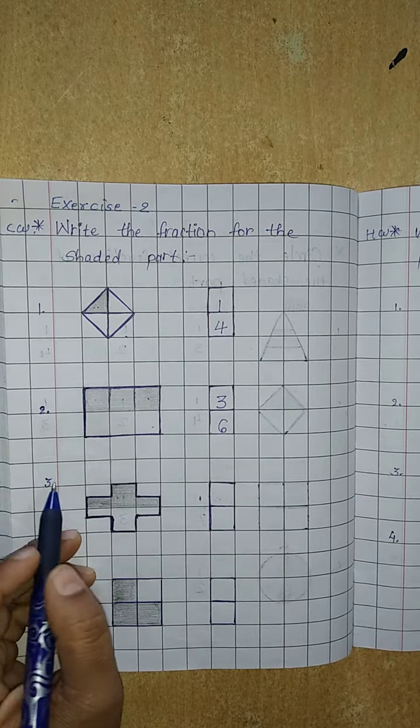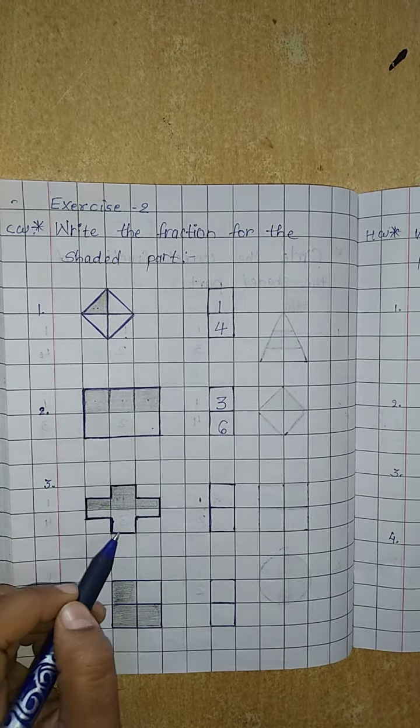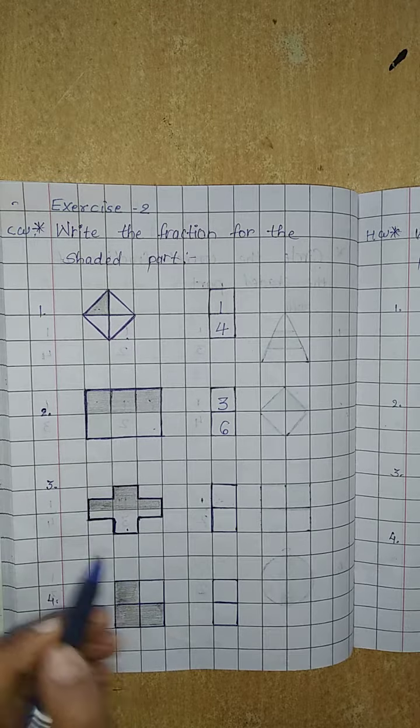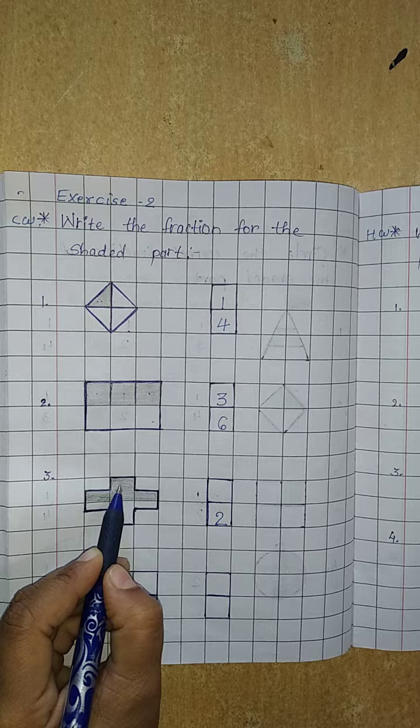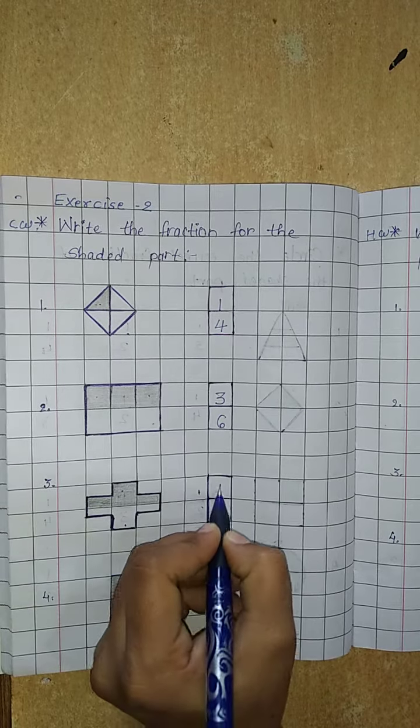Now next, here is how many parts? 1 and 2 parts. So write 2 downside. And how many shaded parts? 1. So write 1 upside.